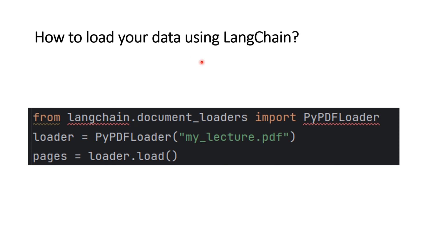The next step is to load your data using Langchain. You can import a data loader — for example, if you want to load a PDF file as an external source of data, you can use PyPDFLoader from langchain.document_loaders. Langchain supports more than 80 different data loaders, so you can also load a YouTube video or a web page. You use PyPDFLoader with the address of your input PDF file, for example mylecture.pdf, and using the load function you load the different pages into a pages object.